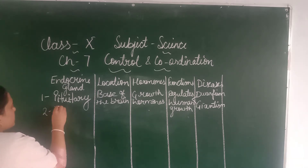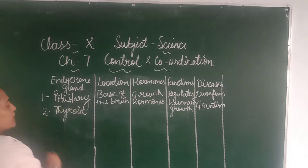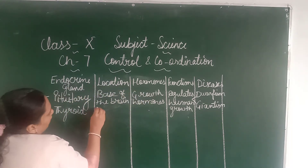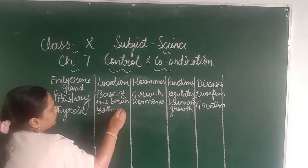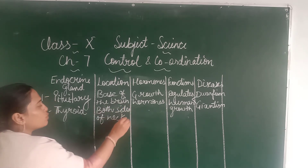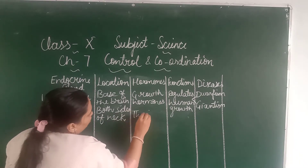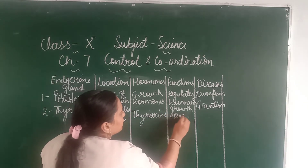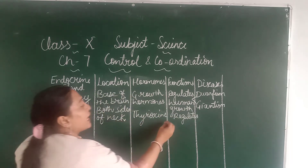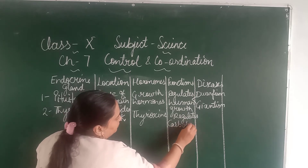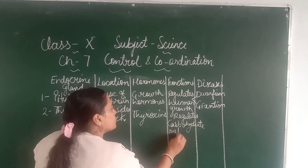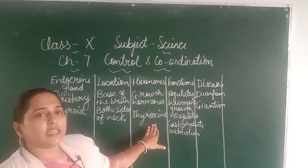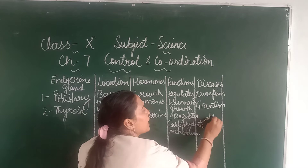The second endocrine gland is the thyroid gland, which is present on both sides of the neck. The hormone it secretes is called thyroxin. The function of thyroxin is that it regulates fats and carbohydrate metabolism. If thyroxin is secreted in large amount, the condition is known as hyperthyroidism.